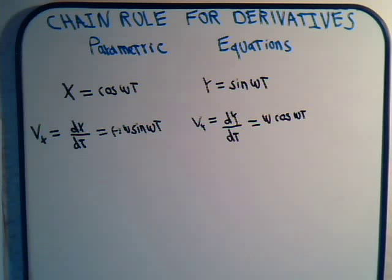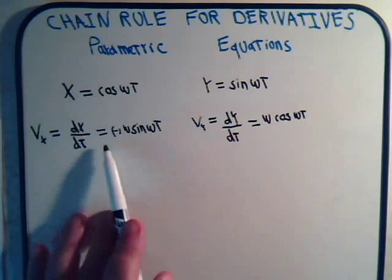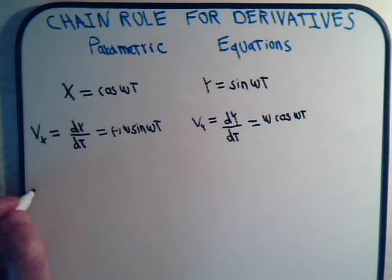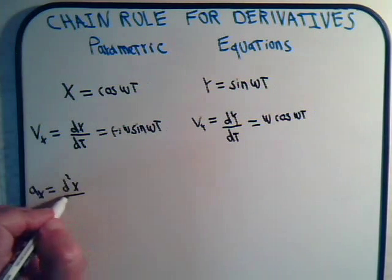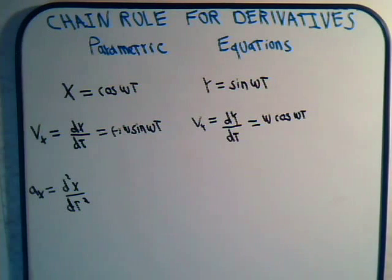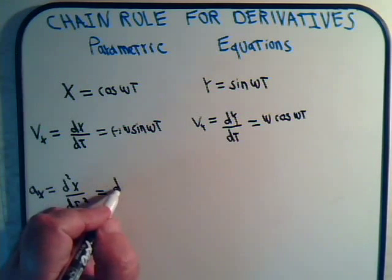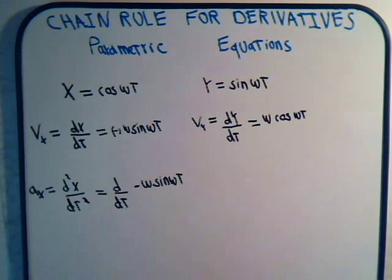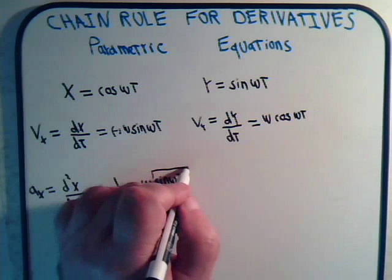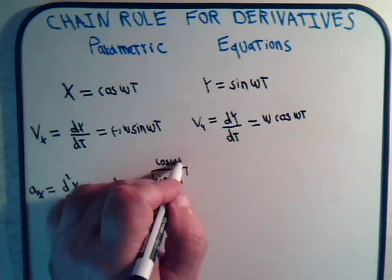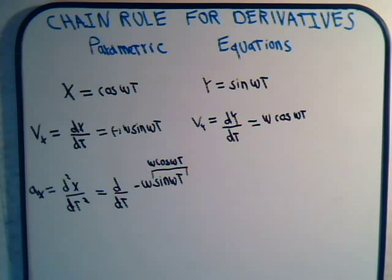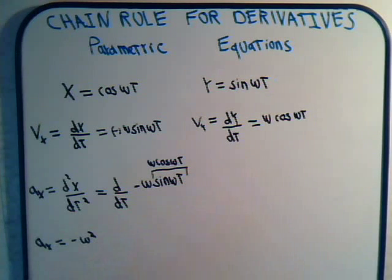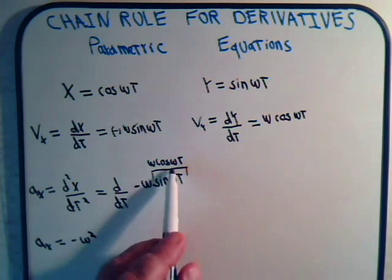Let's say that we wanted to find the acceleration. We'll keep it in this form to give us more practice. So ax equals d²x/dt², or that will equal d/dt of minus ω times the sine of ωt, and of course this derivative is going to be the cosine of ωt times ω. So we have ax equals minus ω² times the cosine of ωt.